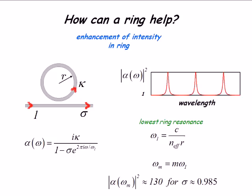The |α|² here, which gives you the enhancement of intensity in the ring, can easily be factors of 100 or 200. In structures people have made in gallium arsenide, the numbers are around 100 to 200. There's no reason they couldn't be much larger.